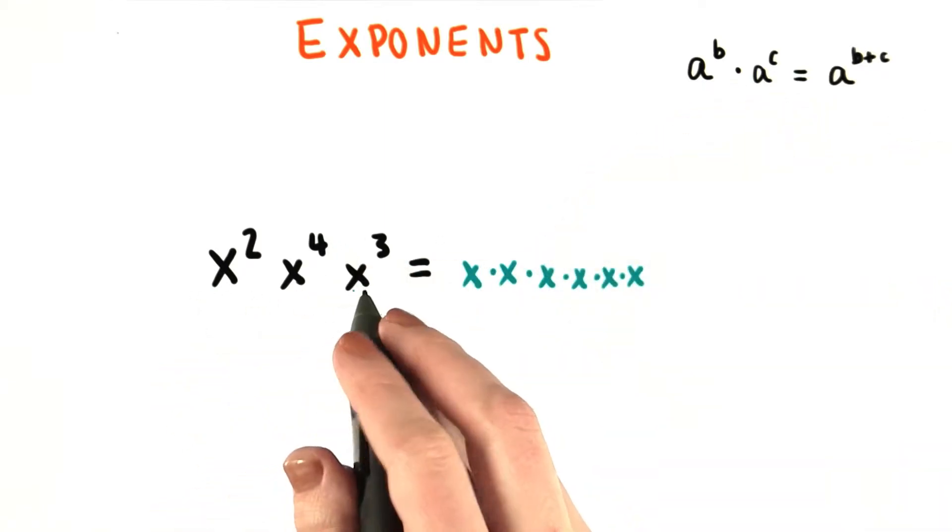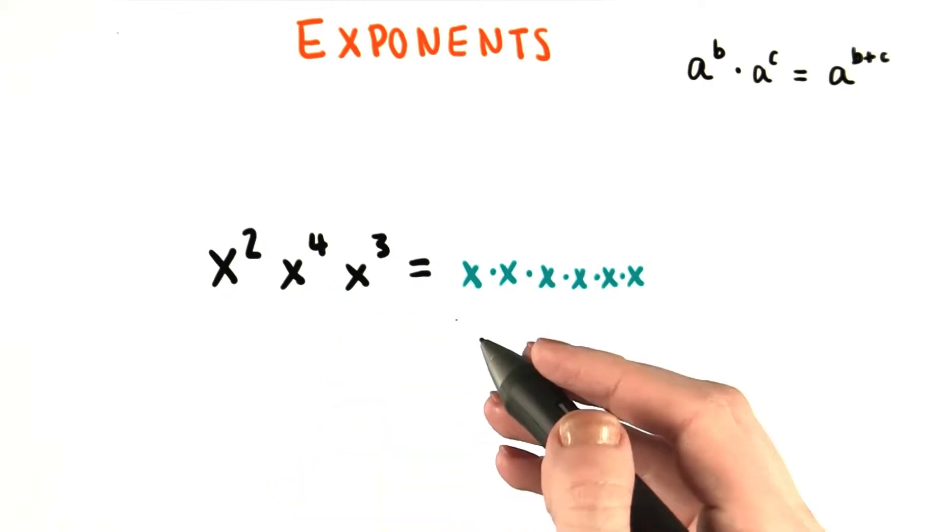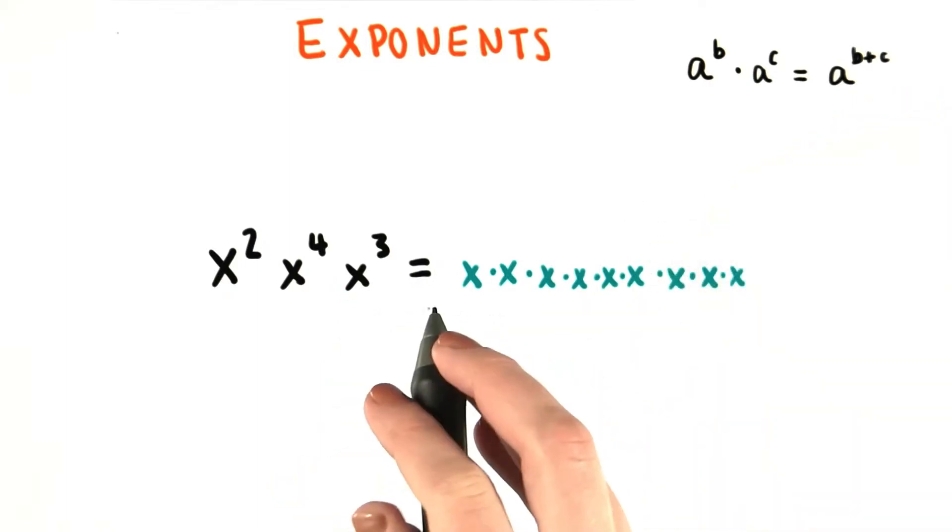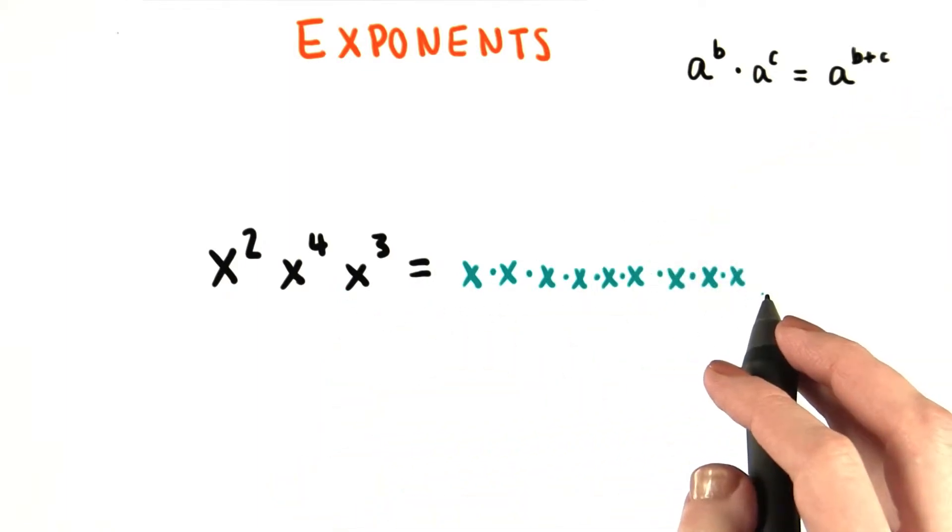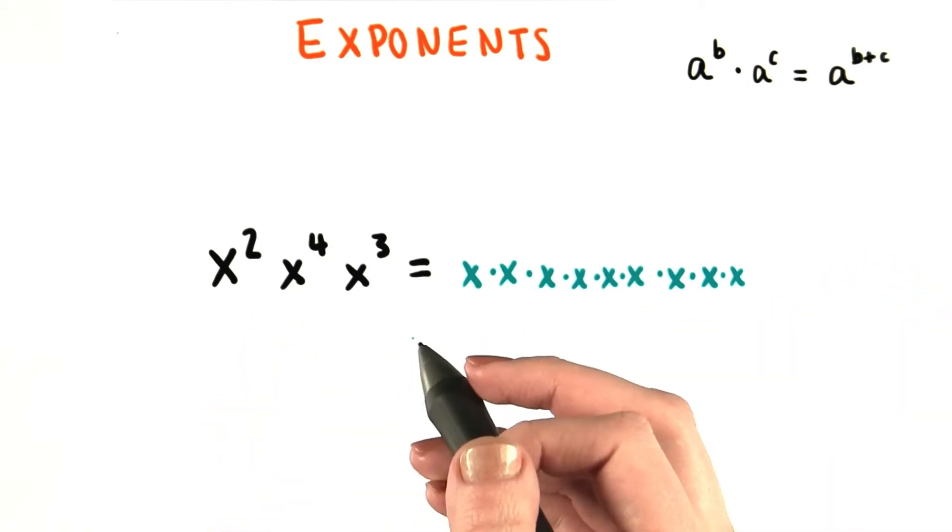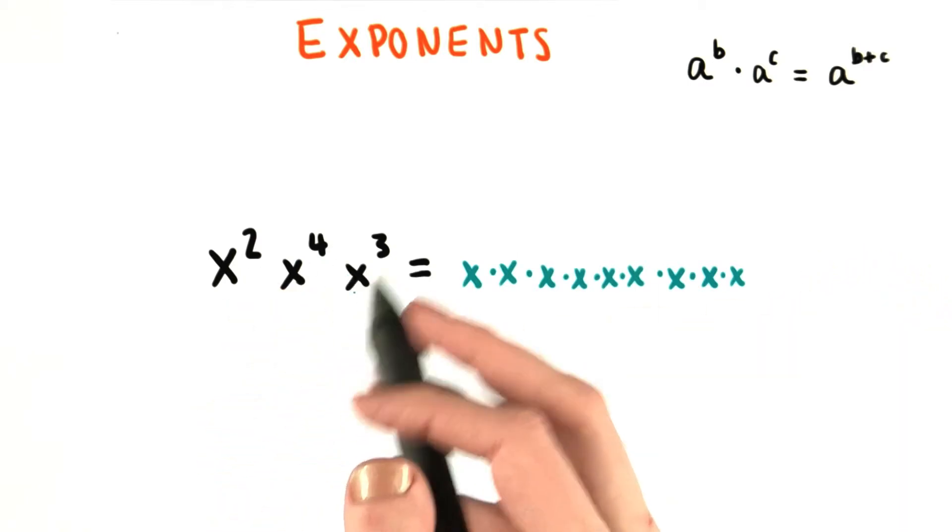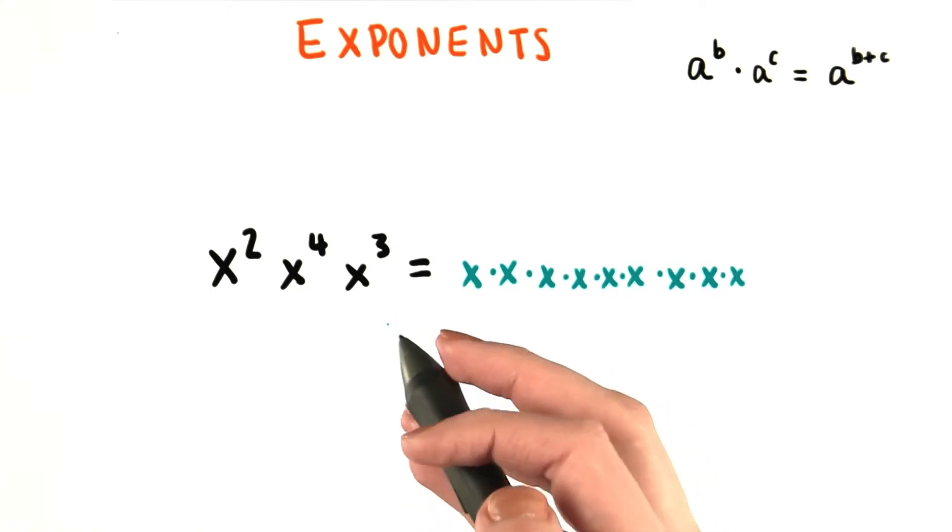And we're also multiplying all of that by another three x's that are multiplied together. So here we have a big string of x's all multiplied together, just like we would expect considering how many exponents we see here, but the same base over and over again.